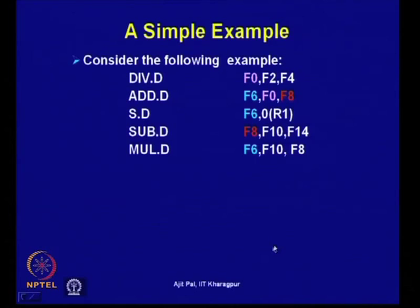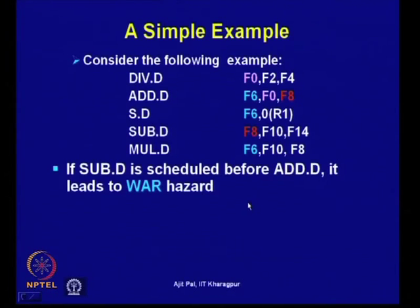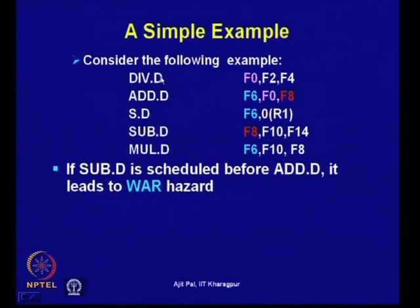Let me give a simple example before discussing Tomasulo's approach. This is a simple FORTRAN code sequence that has a large number of dependences. It has three true dependences — for example, divide-D and add-D have a true dependence because the operand generated by the first instruction is used by the second instruction.